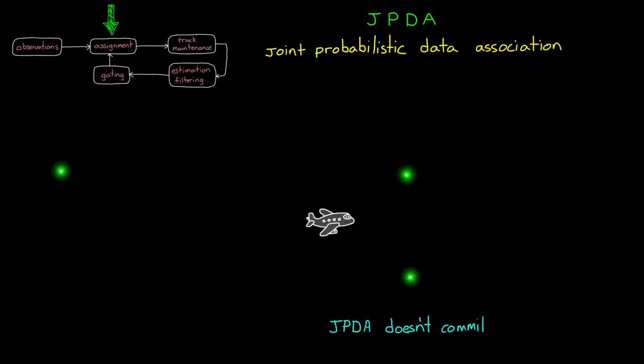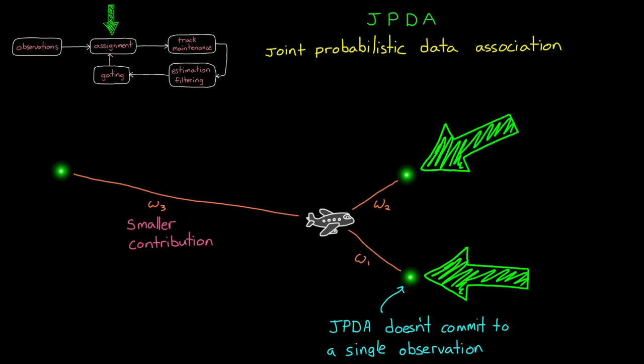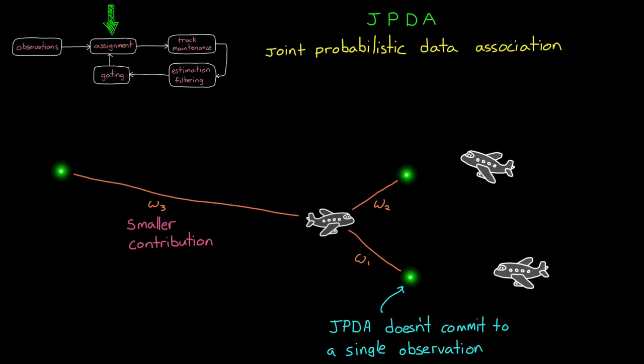The JPDA doesn't make a hard assignment between one observation and one track. Instead, it makes a weighted combination of all of the neighboring observations, with closer observations being weighted higher than further ones. And this is an improvement over GNN, because if there are two observations that could be the object, the JPDA won't fully commit to one, possibly the wrong one.